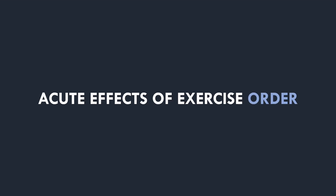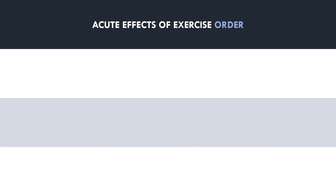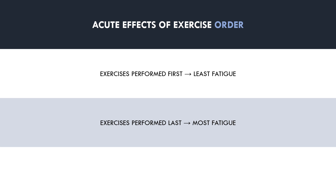Before we delve into the research, let's first establish the logical effects of exercise order. The main influence exercise order will have in a training session is effects on short-term fatigue. We will be in the least fatigued state for the exercises performed first in the session, and the most fatigued for the exercises at the end. Therefore, lifting performance is likely to be superior for the exercises at the start of the session, and inhibited for those performed towards the end. However, this is only likely to be the case if the same muscle group is trained with multiple exercises in the same session.